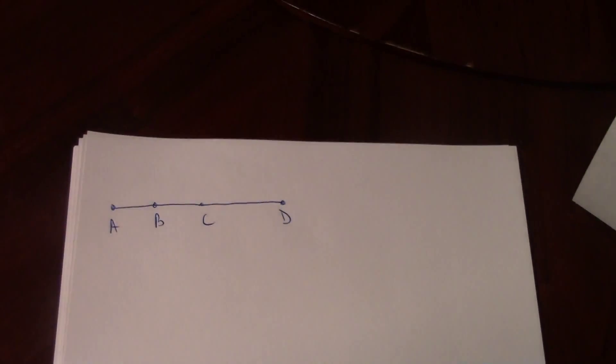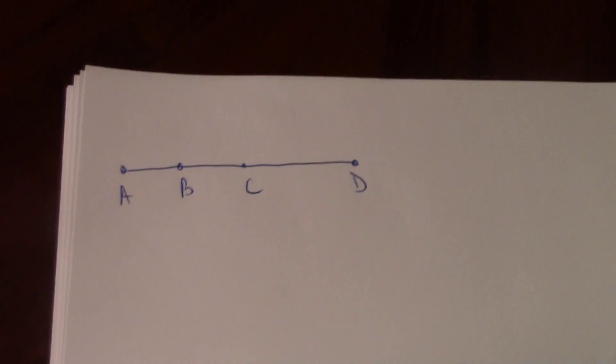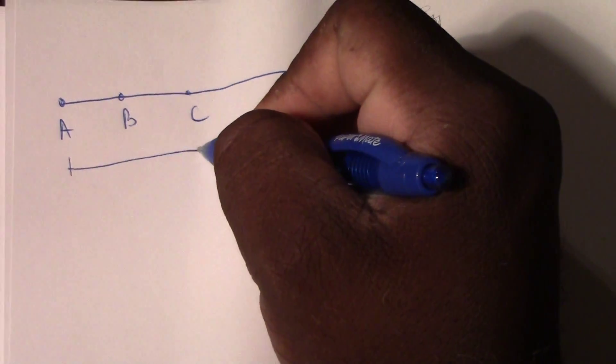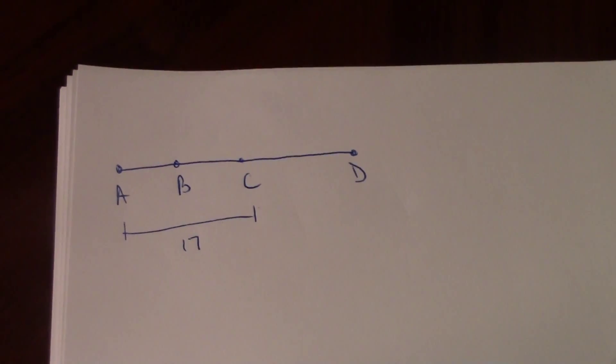For problem number 9, we're told that AC is 17, so the measure of segment AC is going to be 17 units.